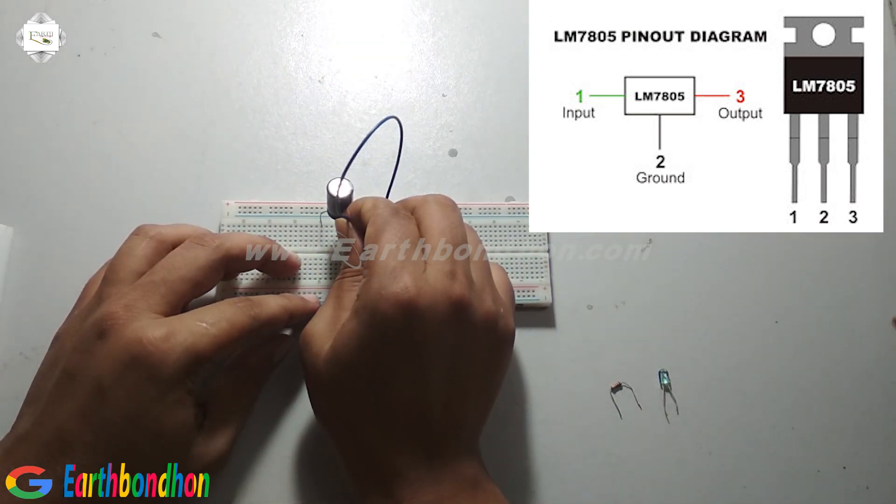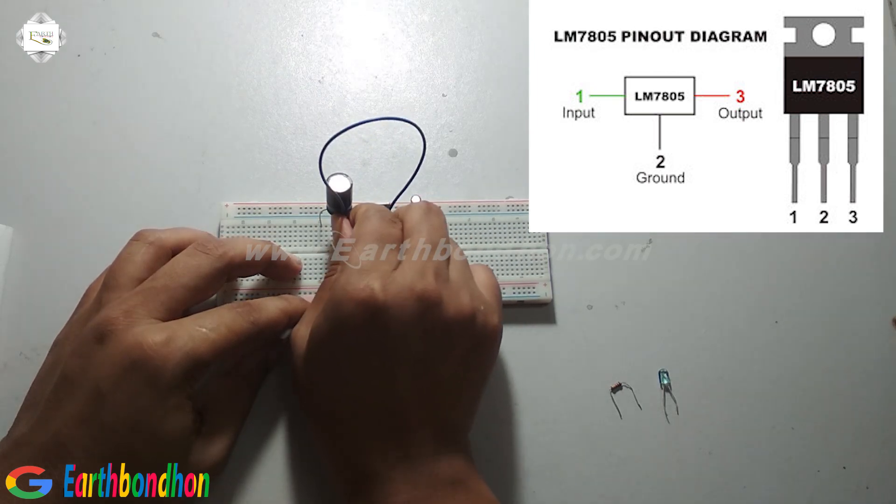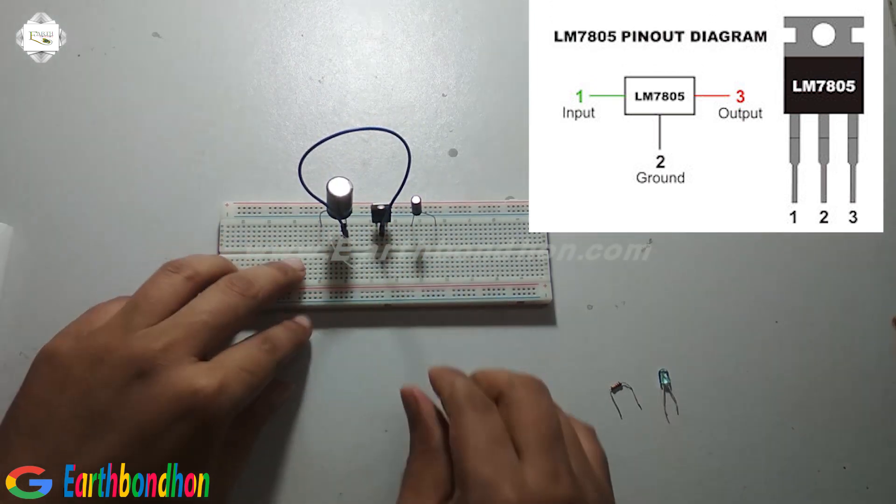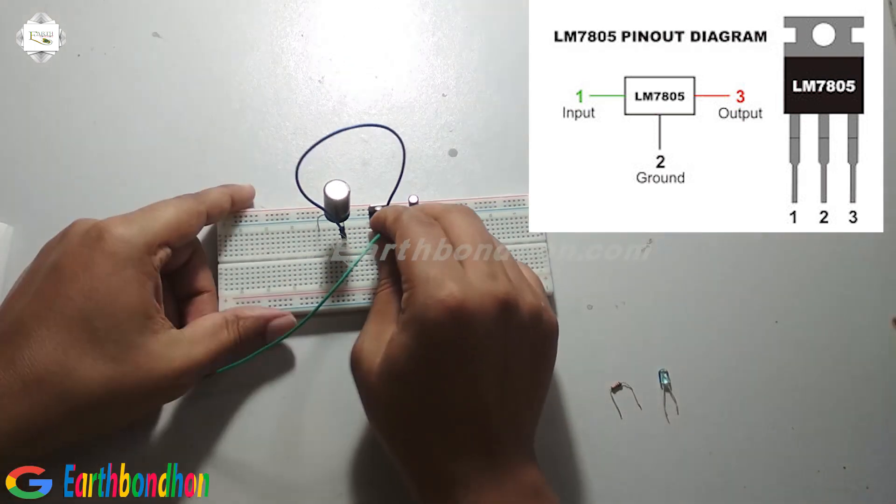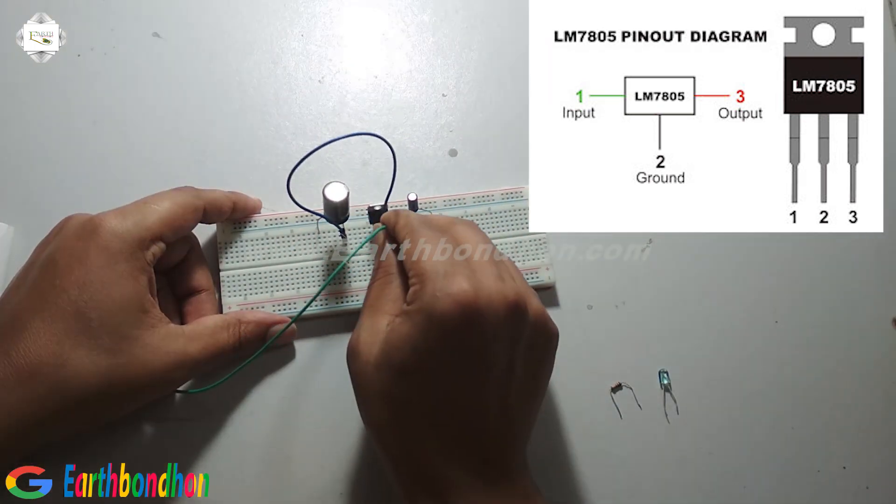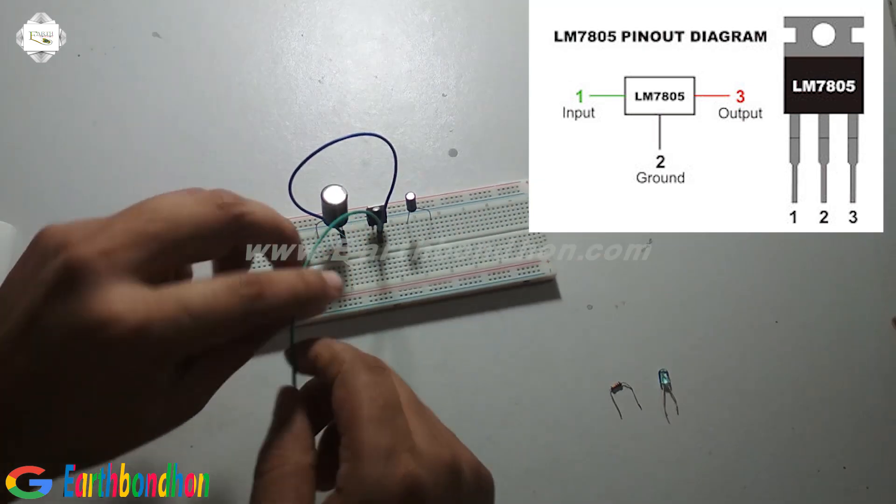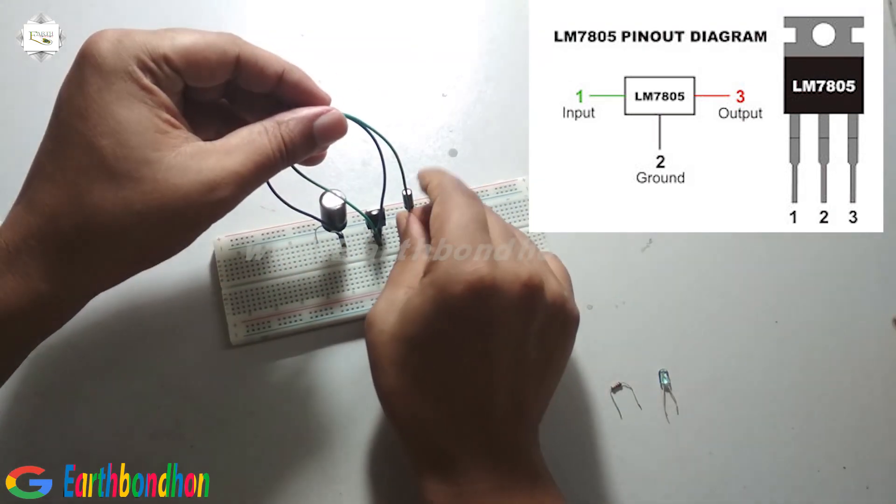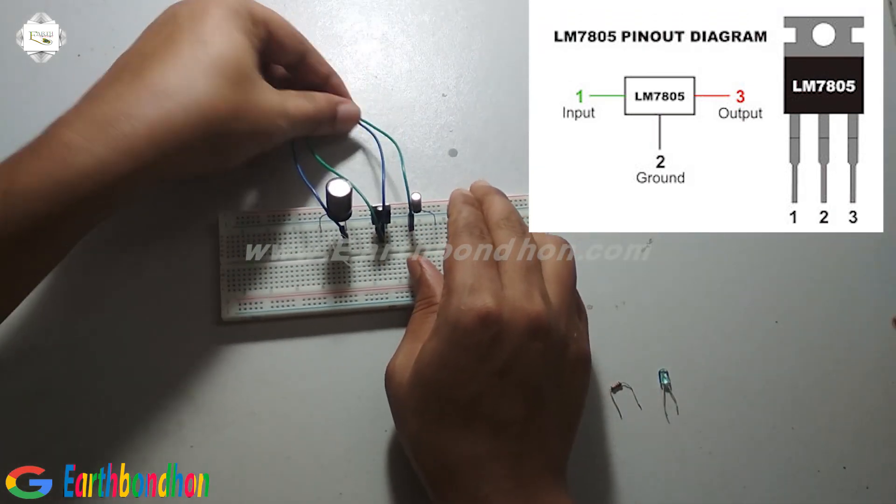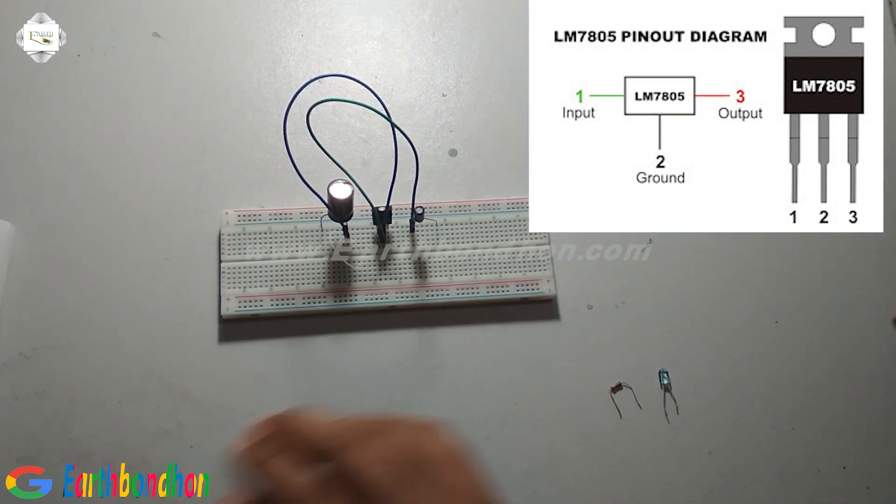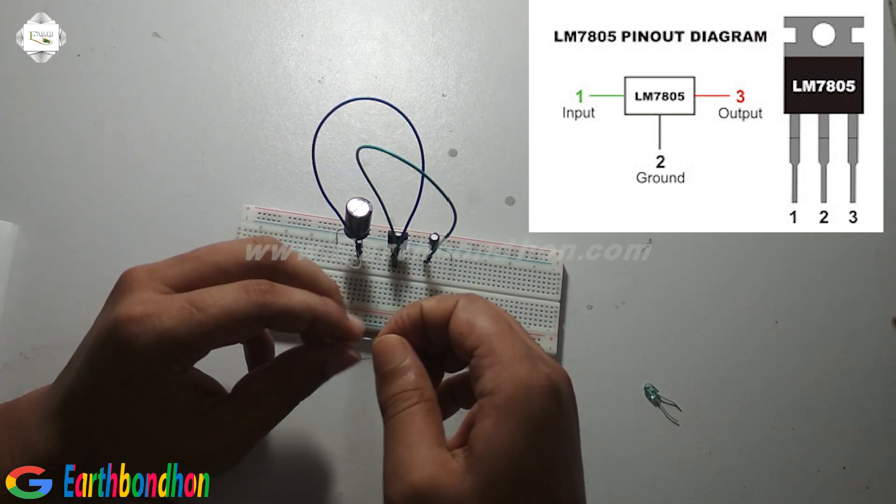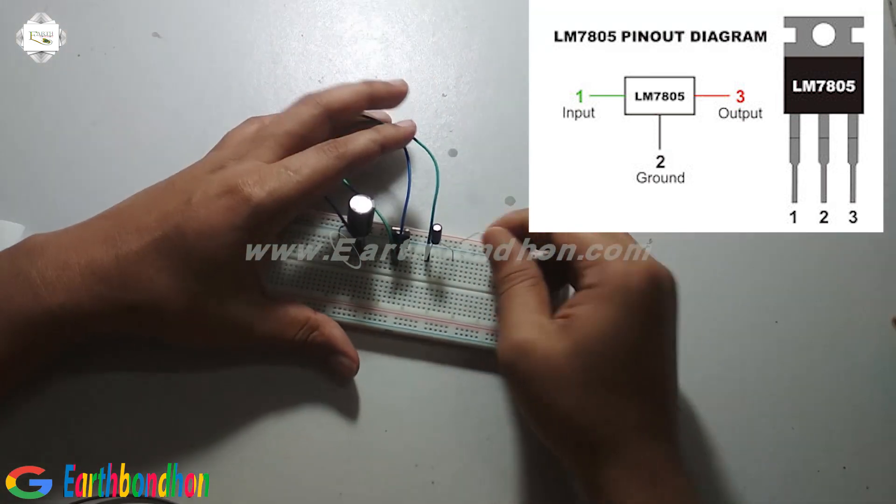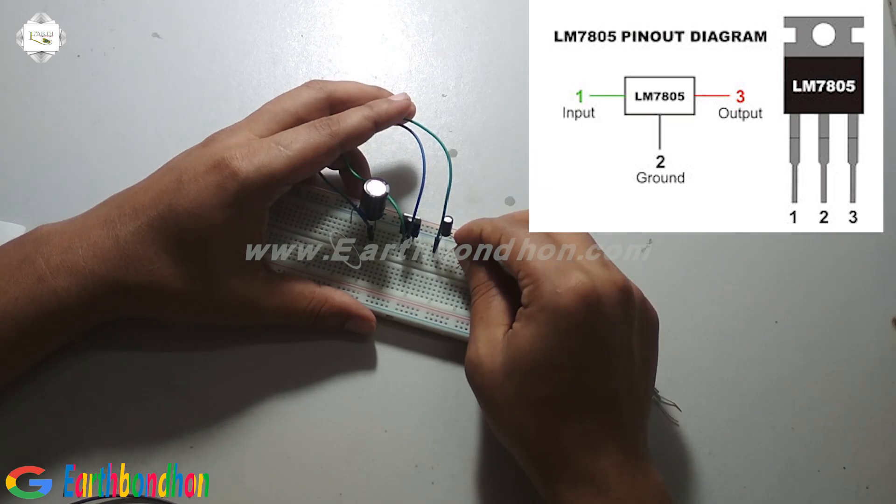Connect the IC and ground. Connect the capacitor. Ground is common. And connect the resistor.